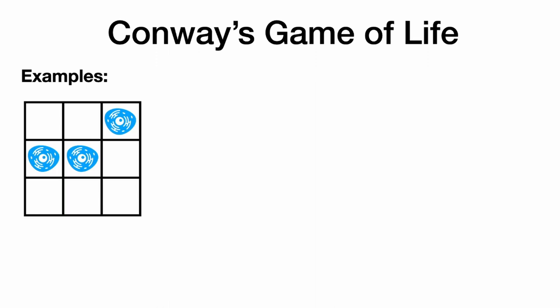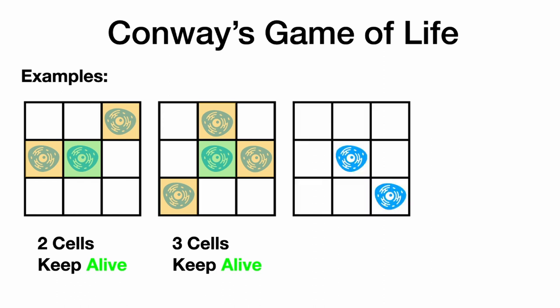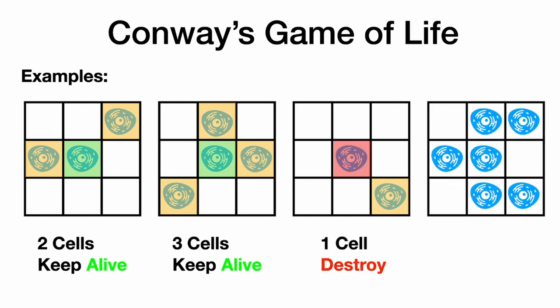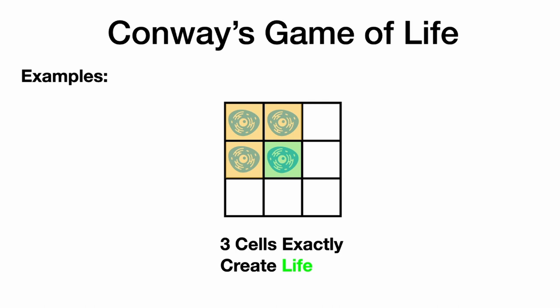Here are some examples. A cell in the middle with two cells around it — two keeps it alive. Three cells around the center cell — yes, that will also keep it alive. Only one cell around the center — not enough to keep life going, so we destroy that cell. Five cells around it — that's way too much, it's overcrowded, so this cell will be destroyed. And if there's no active cell in the middle but three around a dead cell — that actually creates life, so we create a new cell.